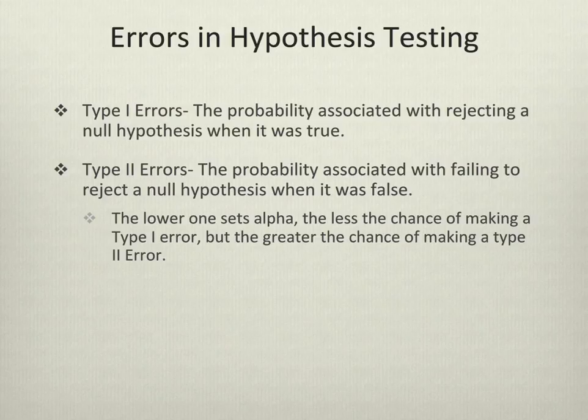There are two types of errors in hypothesis testing: Type 1 and Type 2 errors. They both relate to how you set your alpha or p-value. Type 1 errors are the probability associated with rejecting a null hypothesis when it was true — you find that there's a relationship and reject the null, but actually no relationship exists. This is more likely to happen if you set your p-value too high. For example, if you go with 0.1 and reject when you get a 0.09 p-value, but really there was no relationship. Had you set your p-value at the 0.05 level, you would not have made that error.